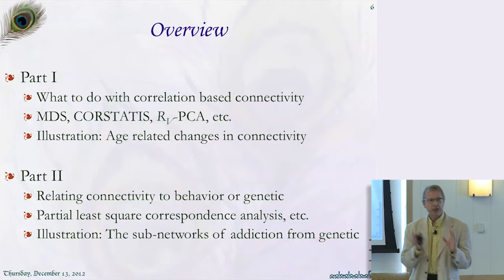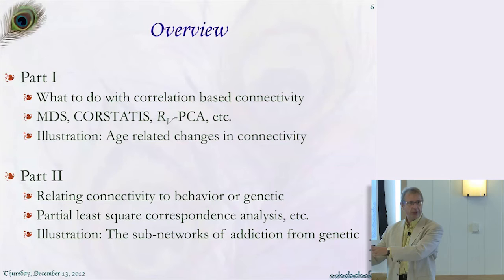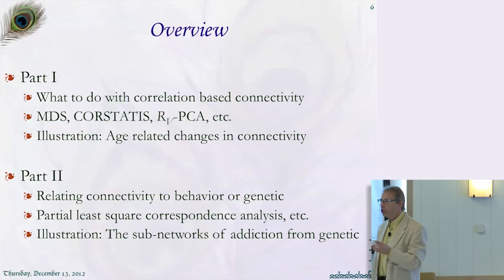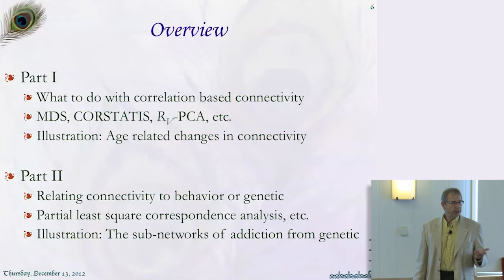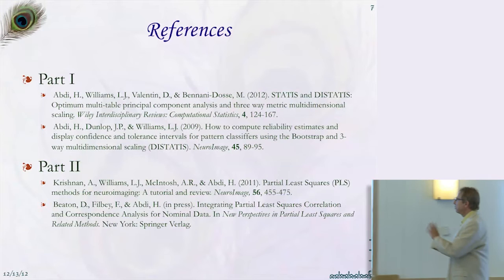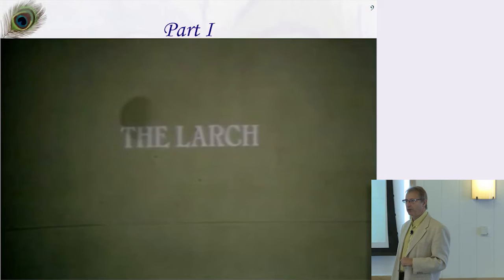In part two, we move from one type of table to two types of tables, where we want to connect connectivity to something else — can we explain connectivity using behavior or genetic background? The technique we'll look at is a variation of PLS, or partial least squares, called partial least square correspondence analysis, and we'll look at the sub-network of addiction. The reference is there if you want to read more.